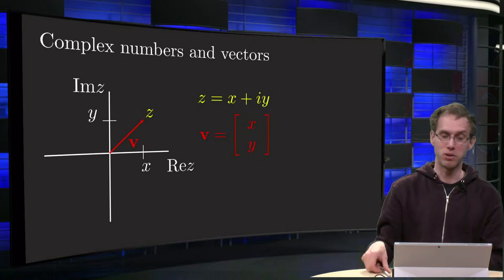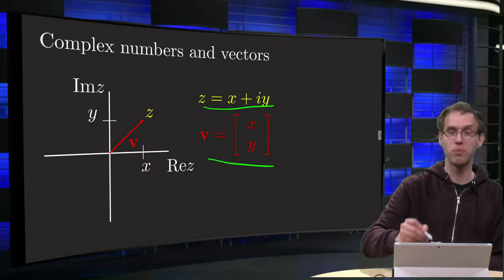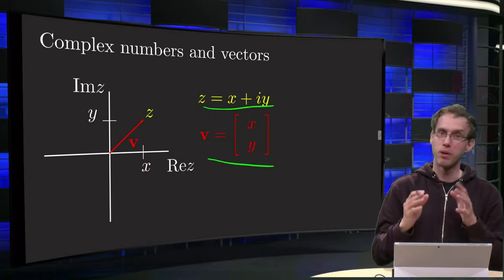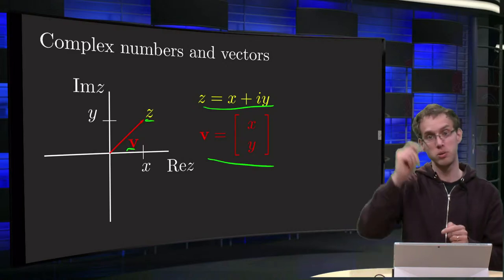So what I'm going to do, we're going to take a point z equals x plus iy, and the vector with components x and y, and we both plot them in the complex plane. Here we have the complex number z and the vector from the origin to z.